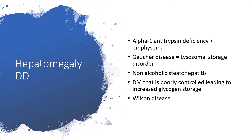Other causes of hepatomegaly include alpha-1 antitrypsin deficiency — those familiar with emphysema will understand this. Gaucher disease is a lysosomal storage disorder. Non-alcoholic steatohepatitis, diabetes mellitus that is poorly controlled leading to increased glycogen storage, and Wilson's disease, which is accumulation of copper due to ceruloplasmin deficiency — the individual will be on penicillamine. You can check my channel for Wilson's disease, I have a complete presentation already published.